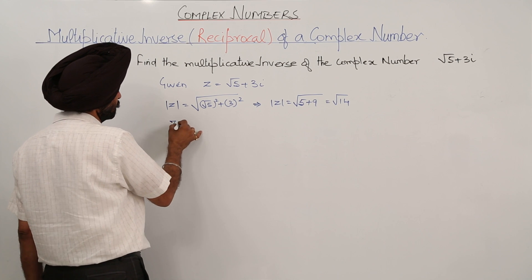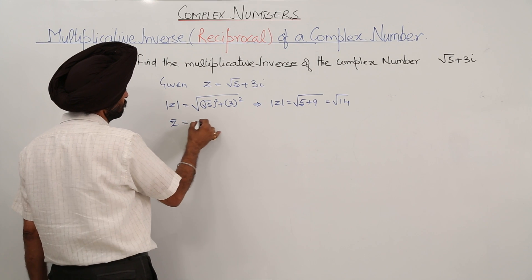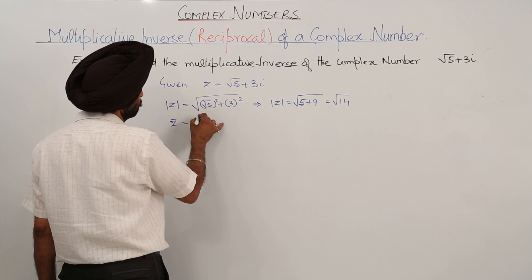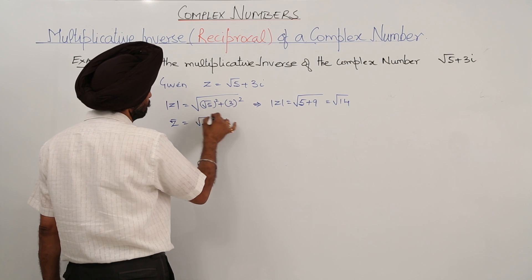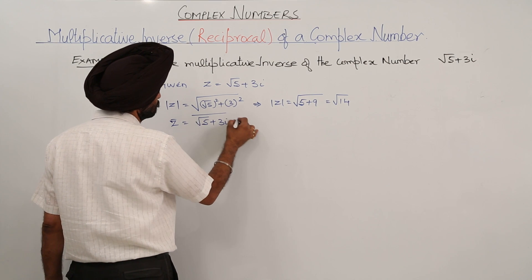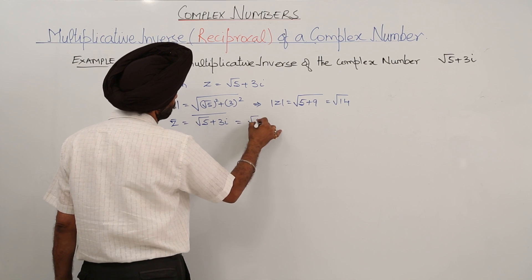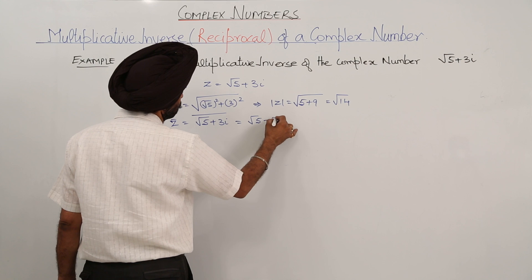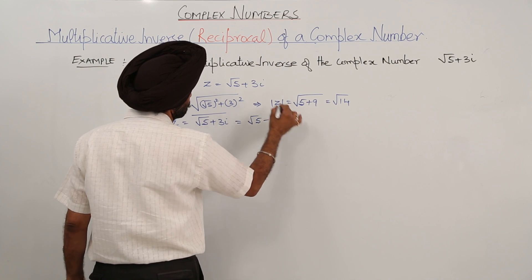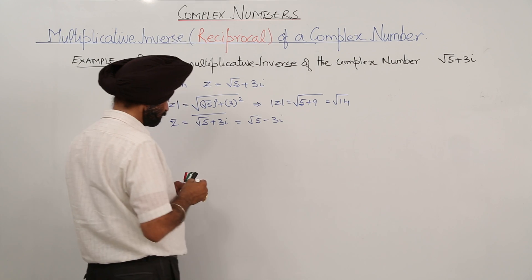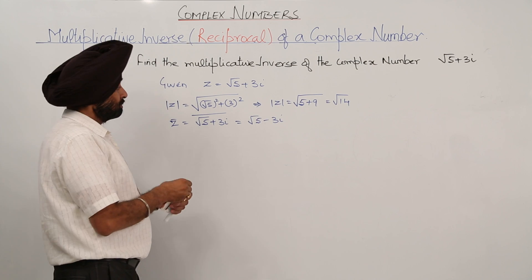The conjugate of Z: the conjugate of √5 + 3i becomes √5 minus 3i.